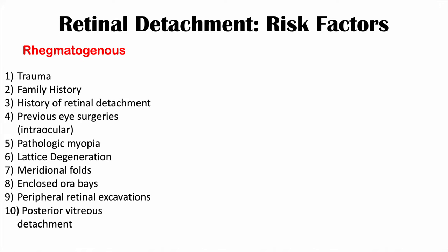Now let's talk about risk factors. Each type has different risk factors. For regmatogenous retinal detachment, trauma is a key risk factor, as a strike to the eye could cause a rip or disruption of the retina. Family history is important — especially first-degree relatives who have had retinal detachment. A personal history of retinal detachment in one eye increases the risk in the other eye as well.